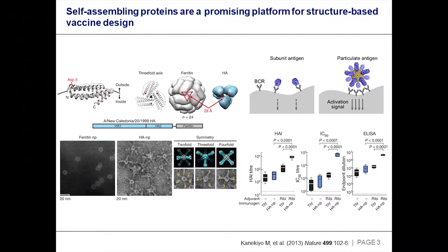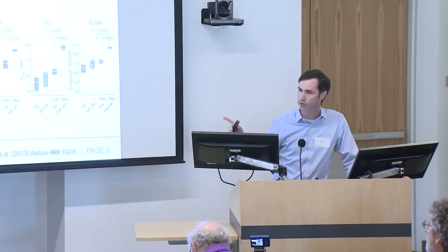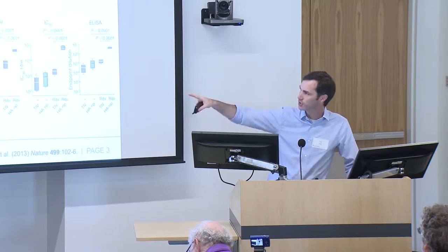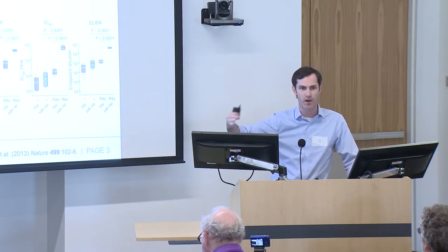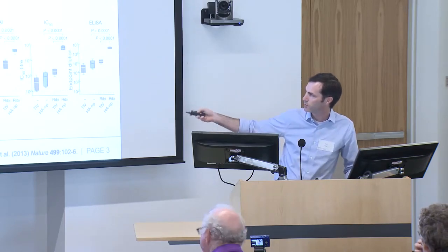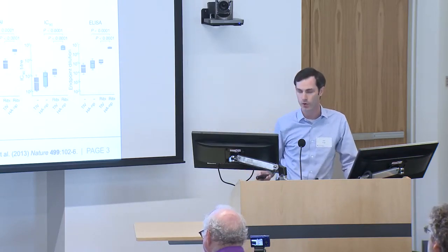Self-assembling proteins have been explored as a very promising platform for antigen presentation. A lot of work has focused on the use of naturally occurring self-assembling proteins such as virus-like particles or more structural proteins like ferritin. This is work from the VRC where hemagglutinin, a very complex viral glycoprotein antigen, was genetically fused to the subunit of ferritin, a 24-subunit protein octahedron, to create spiky particles that present multiple copies of hemagglutinin to B-cells. This led to robust increases in humoral immune responses.